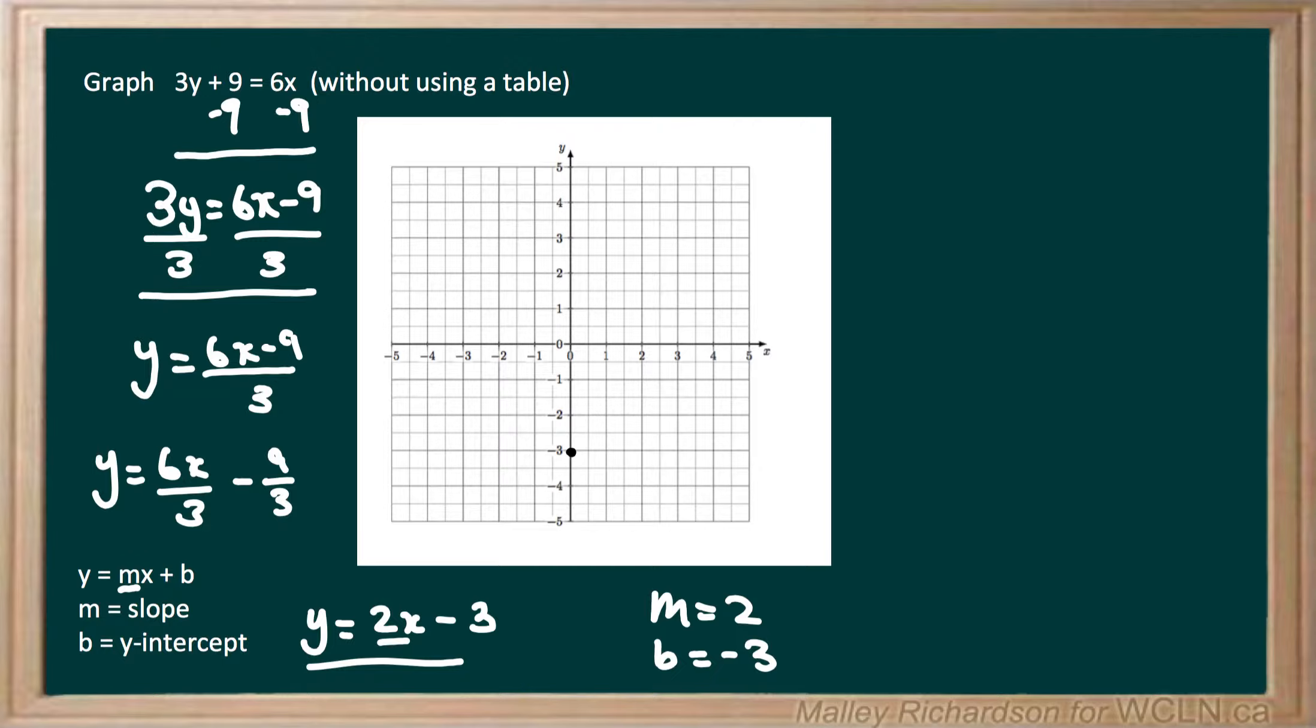Now our slope is positive 2. So that means we can either move up 2 and then to the right one, or we can move down 2 and to the left one. Let's start by moving up 2 and to the right one. So we'll move up once and twice, and then to the right once. So our second dot is going to be right there and we can connect our lines.